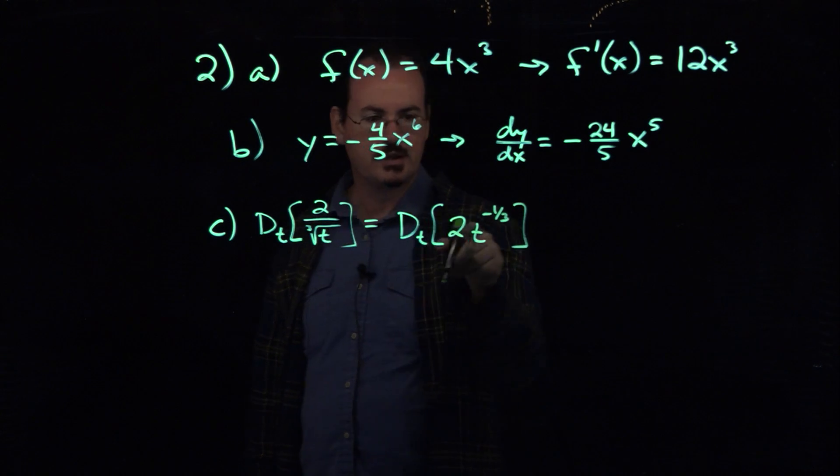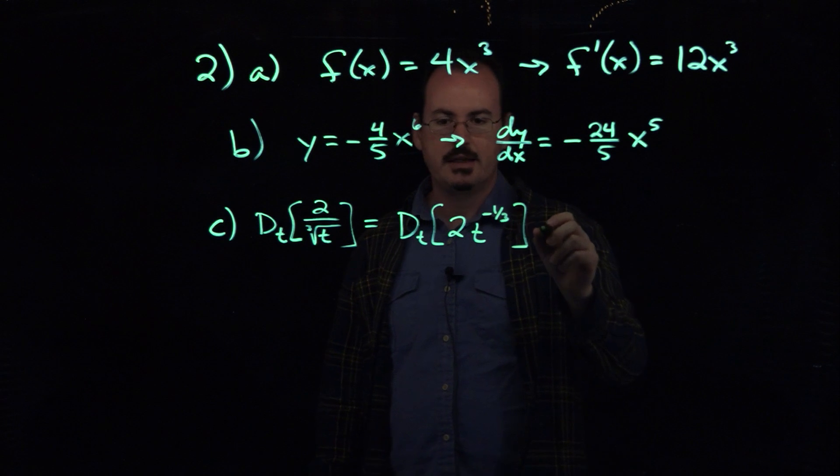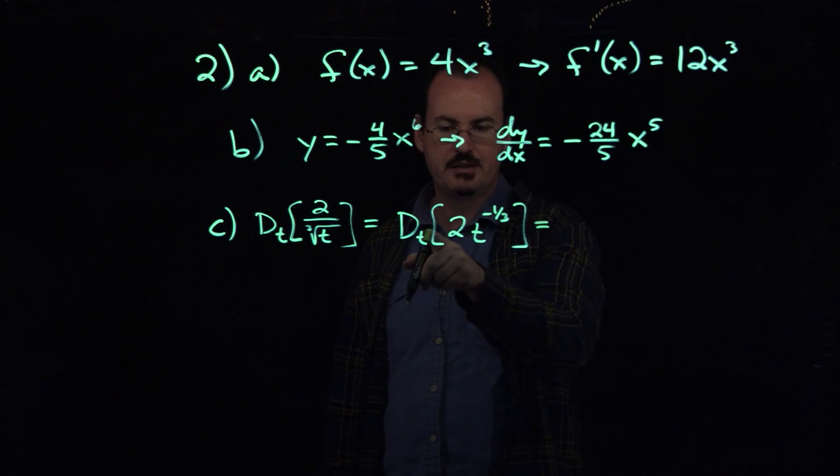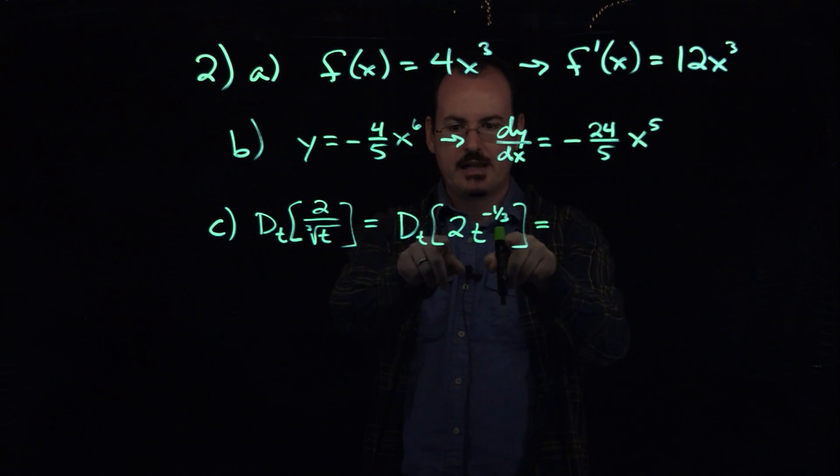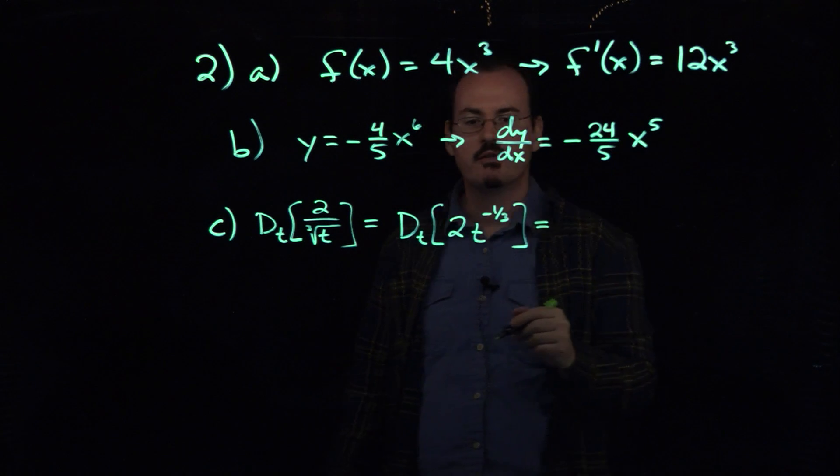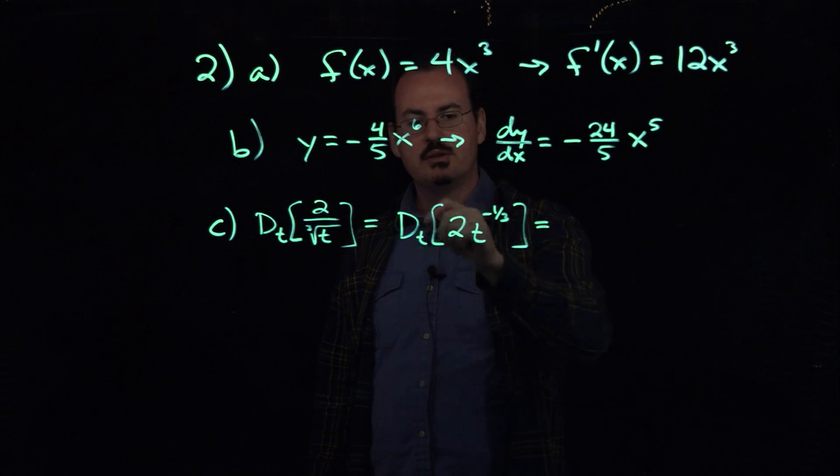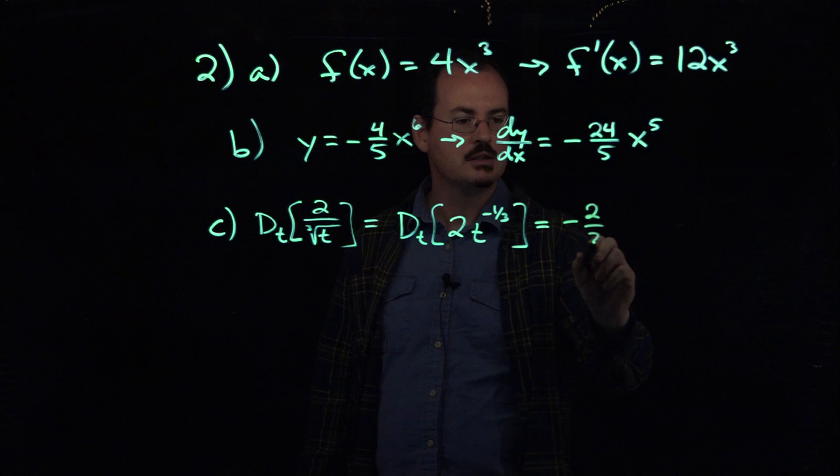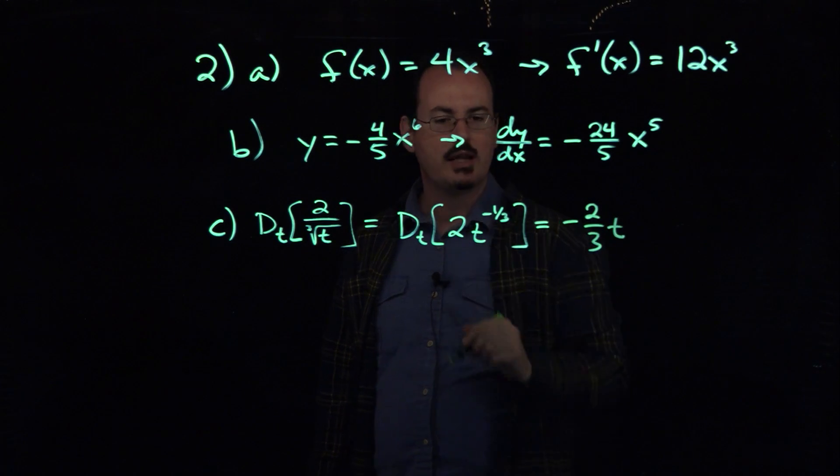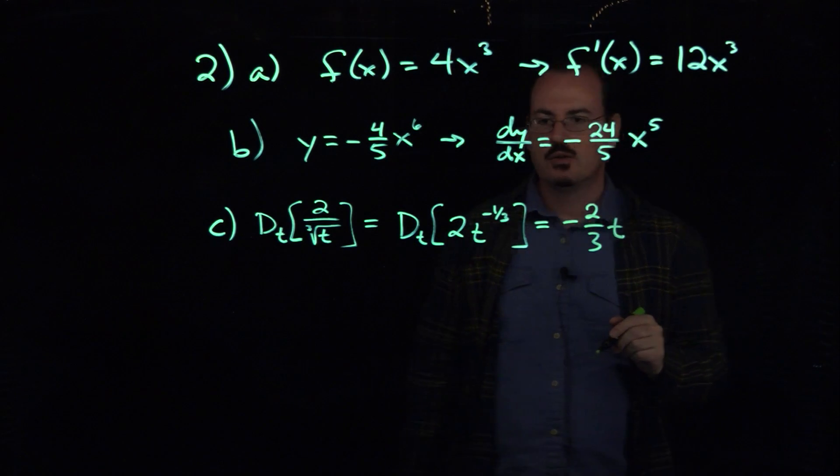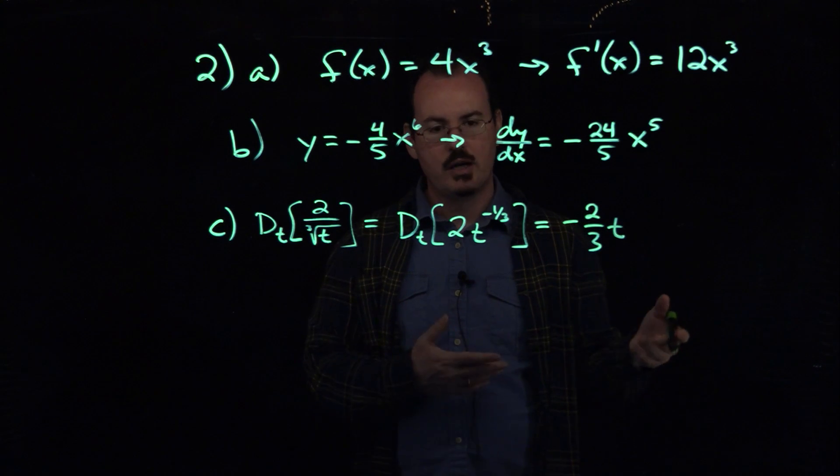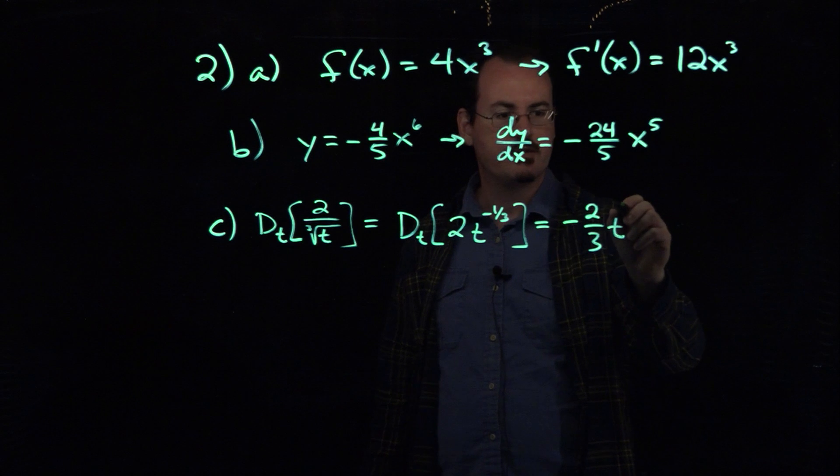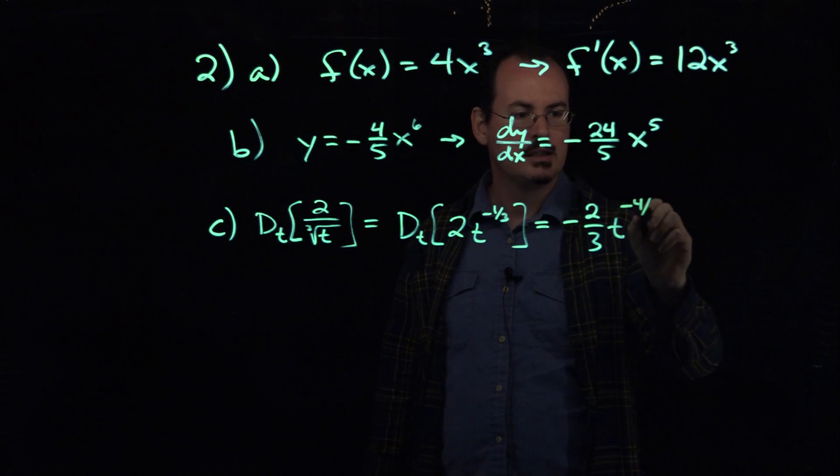Again, the negative because it's in the denominator, the one-third because it's a cube root. Now it's a power function. Remember that this d sub t thing here is just saying that whatever's in the brackets after it, I want to take the derivative of it. So I'm going to use the power rule, put the negative one-third in front, multiply it by the 2. That's going to give me negative two-thirds t. And then I have to lower that power by 1. So minus one-third minus 1 is the same as minus one-third minus three-thirds, so that's negative four-thirds as the power.